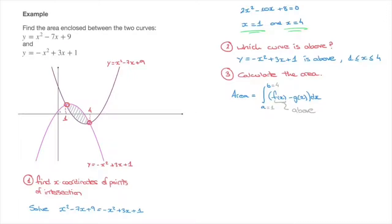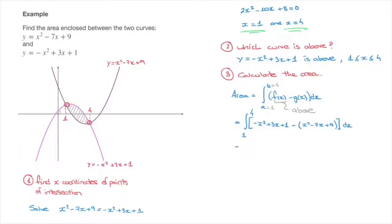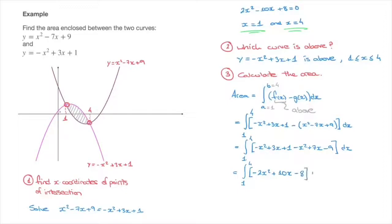We write the area as the definite integral from 1 to 4 of (negative x squared plus 3x plus 1) minus (x squared minus 7x plus 9), writing the lower curve's equation in parentheses. Simplifying the integrand gives the definite integral from 1 to 4 of negative x squared plus 3x plus 1 minus x squared plus 7x minus 9, which equals the definite integral from 1 to 4 of negative 2x squared plus 10x minus 8.